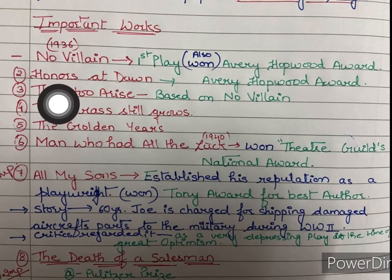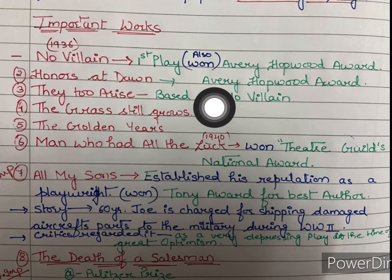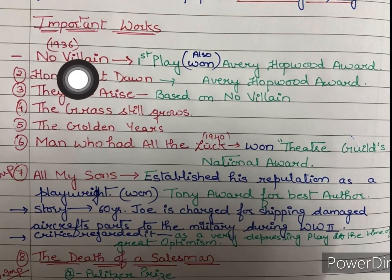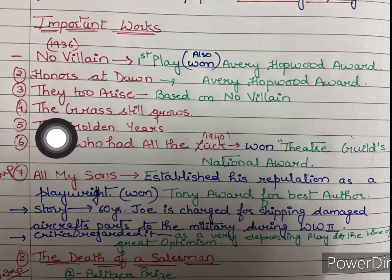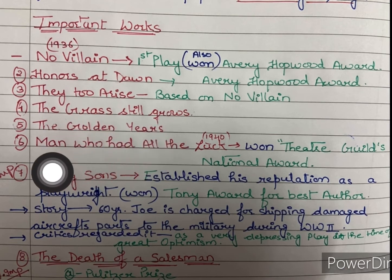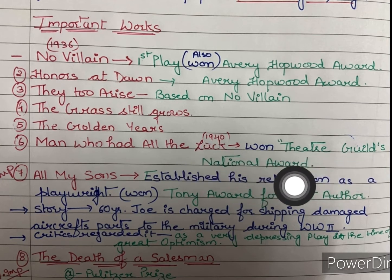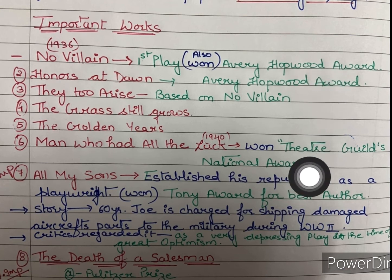Third is They Too Arise, also known as Day to Arise, based on No Villain. Fourth is The Grass Still Grows. Fifth is The Golden Years. Sixth is The Man Who Had All the Luck — for this work he won the Theatre Guild's National Award. Toh yaha inhye mila Theatre Guild's National Award.